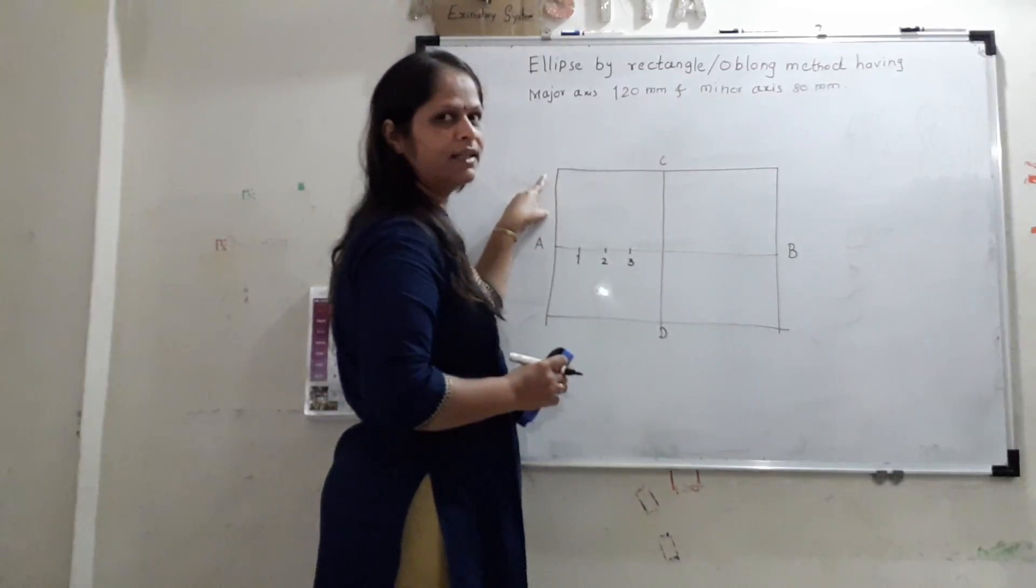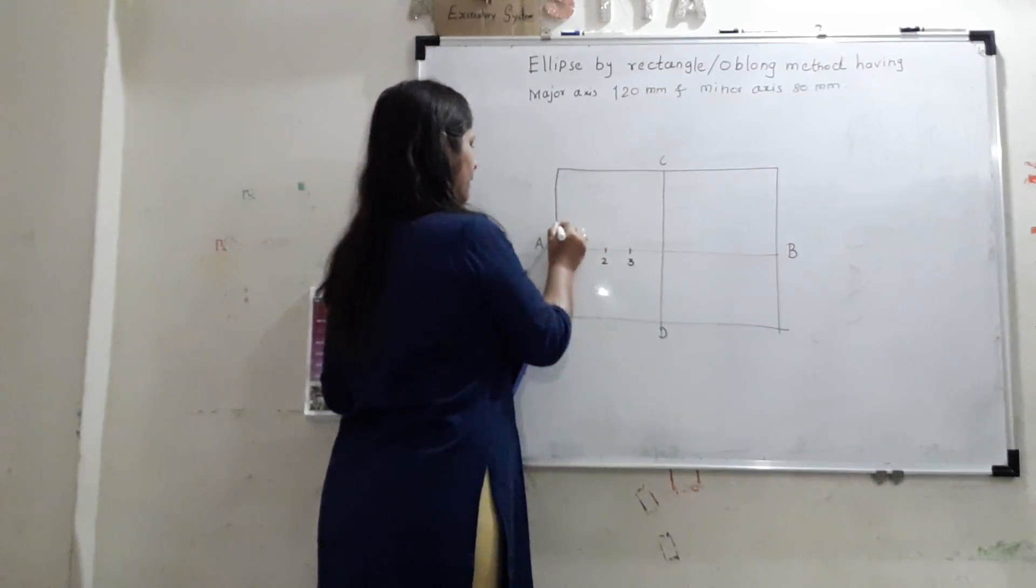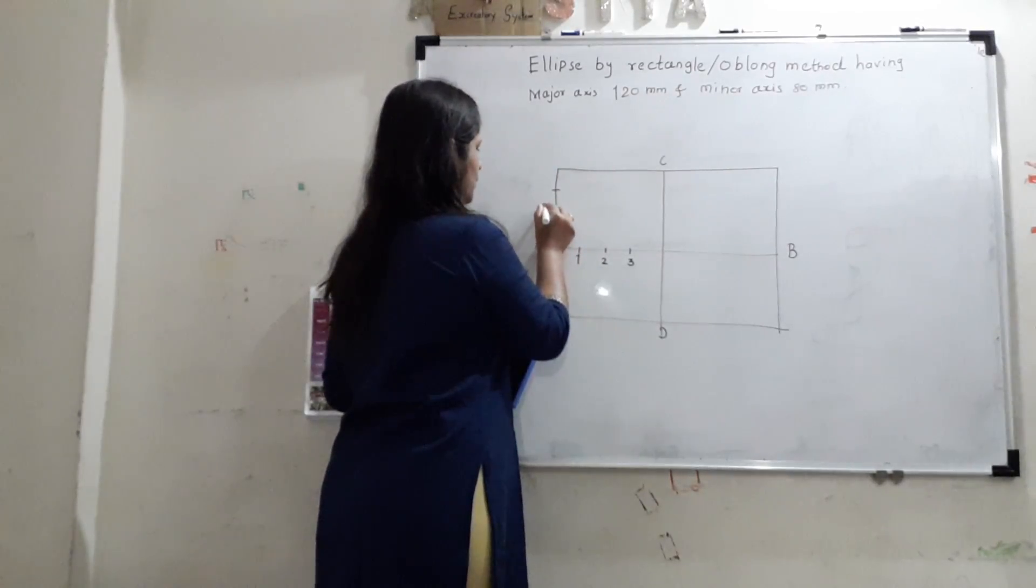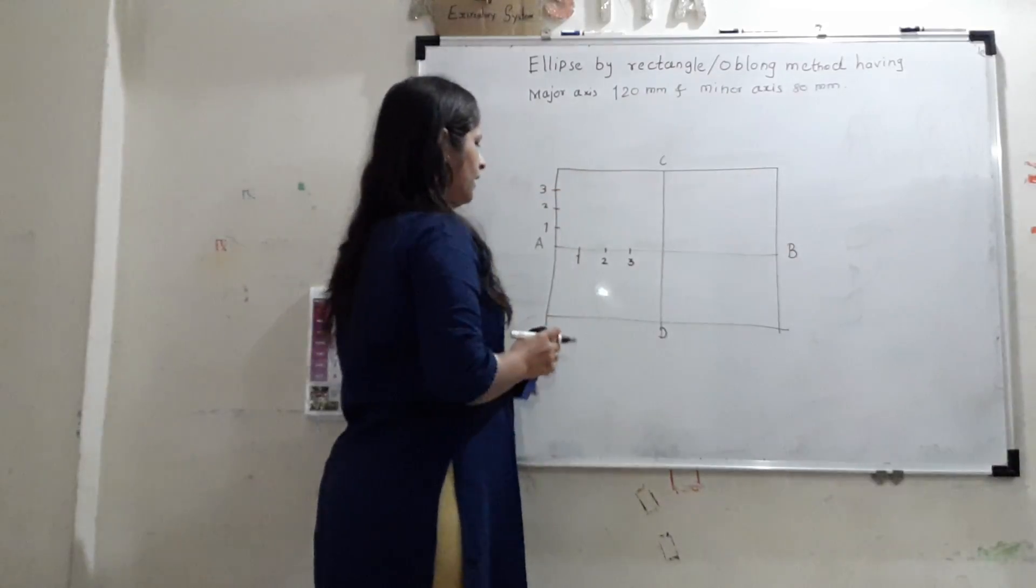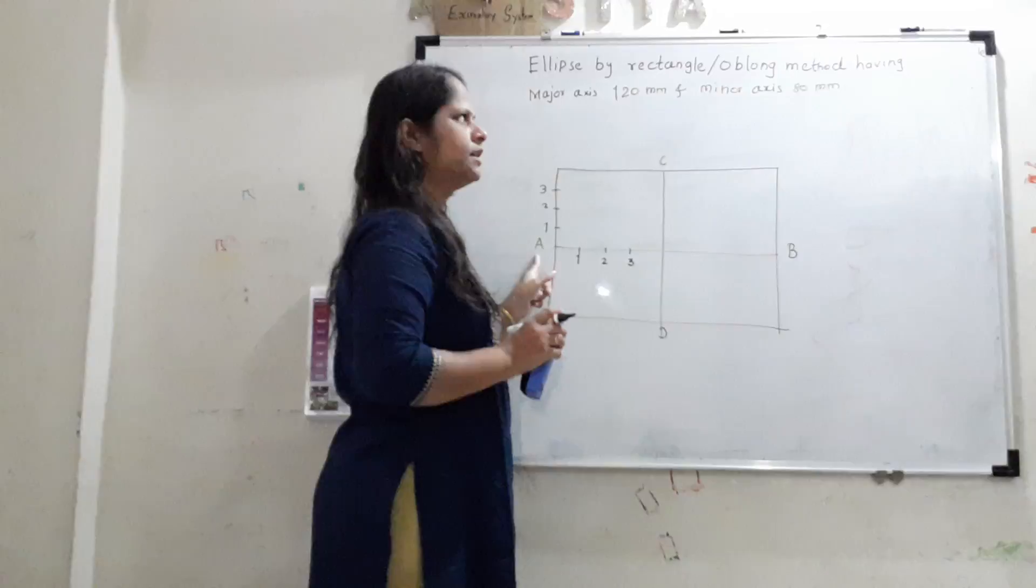Similarly, we will divide this into equal four parts. Half is 40. So, 10 mm each. These divisions should be equal. 1, 2 and 3. This one is also closer to A. So, this is the key point of construction of ellipse.